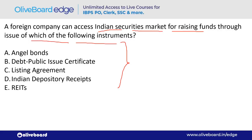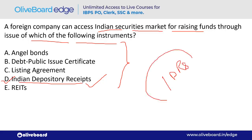What are IDRs? IDRs are Indian Depository Receipts — option D. The short form is IDR.